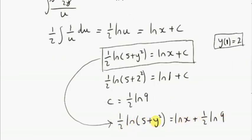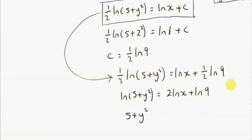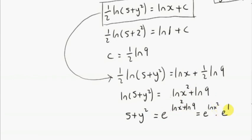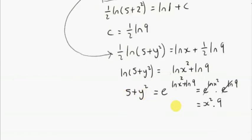So now we can write down our particular solution. The next step is to make y the subject. You can multiply both sides by 2, then raise e to the power of both sides. e to the power of ln of 5 plus y squared is just 5 plus y squared. 2 times ln of x can be written as ln of x squared — we can bring the power down, or write the argument to that power. We have e to the power of ln x squared plus ln 9, which is e to the ln x squared times e to the ln 9. e to the power of ln x squared is just x squared — they're inverse functions, they effectively cancel. Similarly, e to the power of ln 9 is 9. So we get 5 plus y squared equals 9x squared.